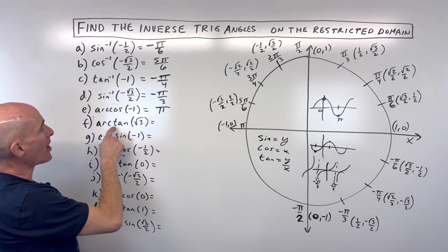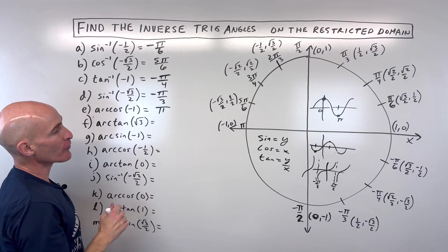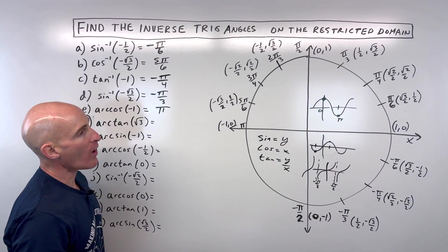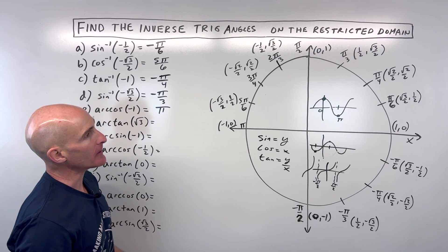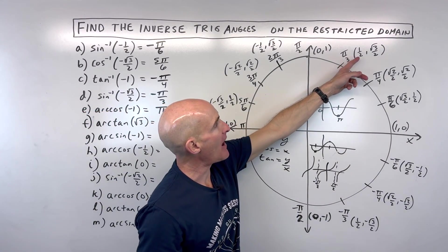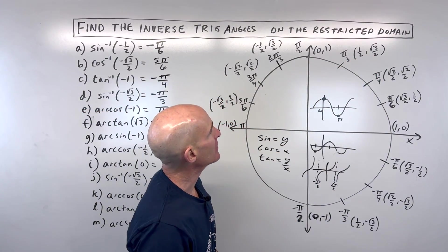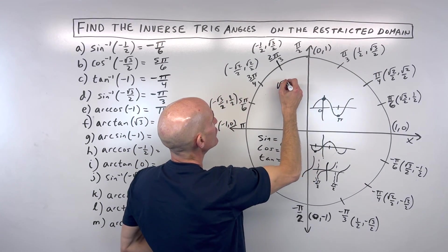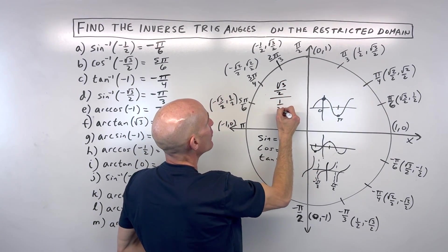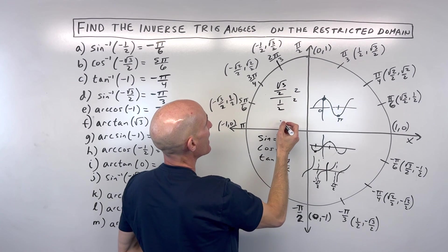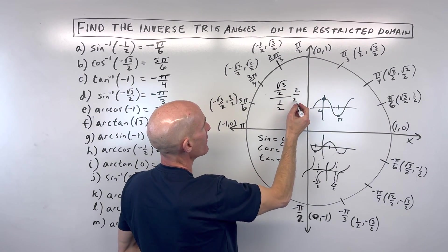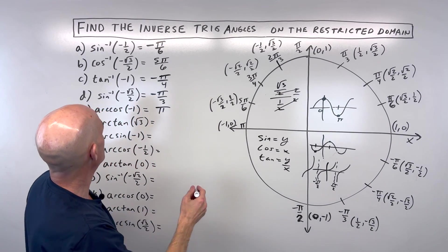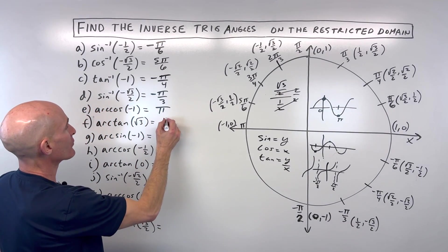For letter F: arc tangent of root three. Tangent is the y over x. Where is y over x equal to root three? That's going to be at pi over three. When you take root three over two divided by one-half, multiplying numerator and denominator by two, the twos cancel and you get root three over one — so the answer is pi over three.